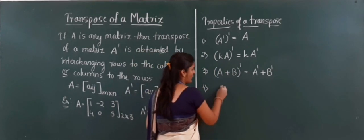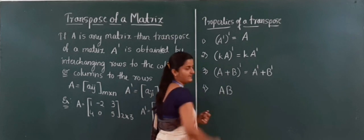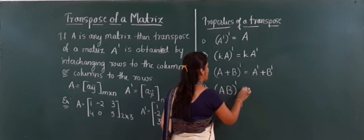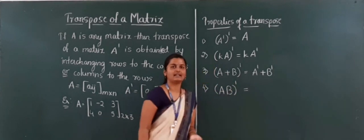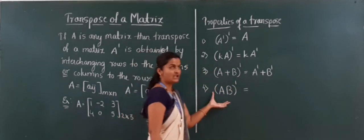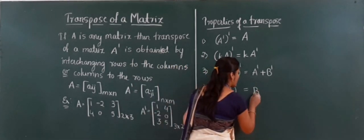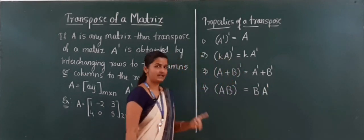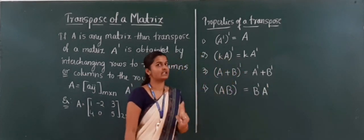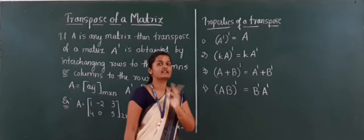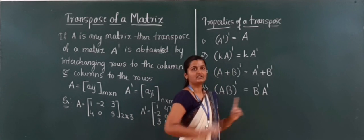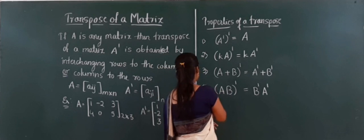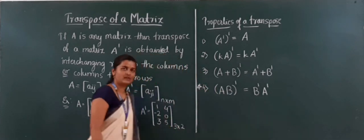The fourth and most important property: if we have two matrices A and B multiplied together, and then apply the transpose — that is, (AB)' — this answer is always equal to B dash into A dash. Please concentrate: AB whole dash is NOT equal to A dash into B dash. There will be a reversal — it is B dash into A dash. B comes first and A comes later. Please star mark this one.